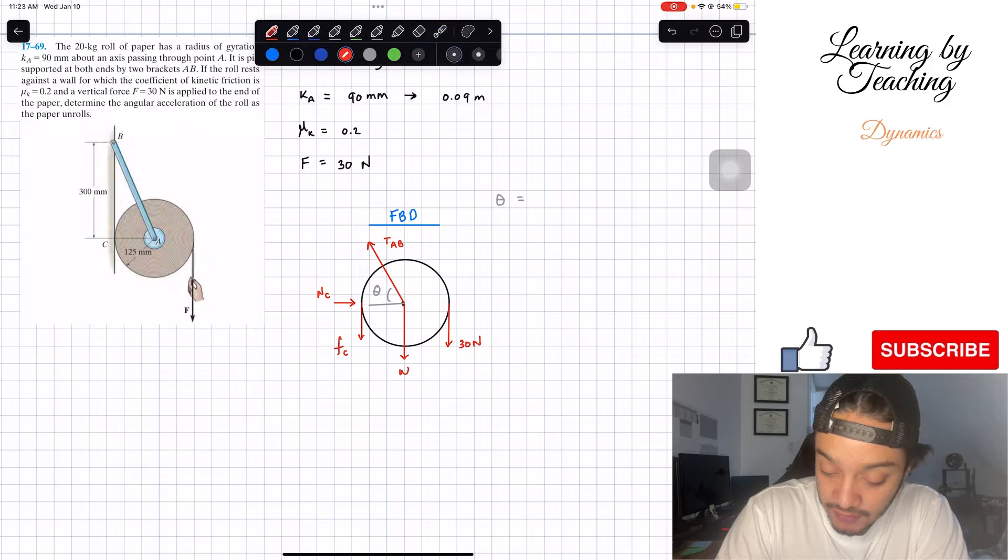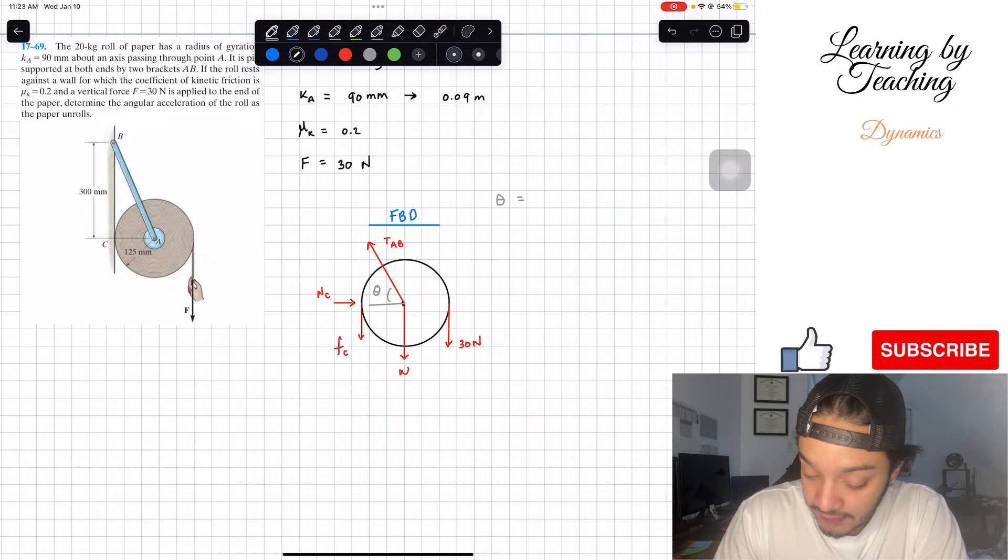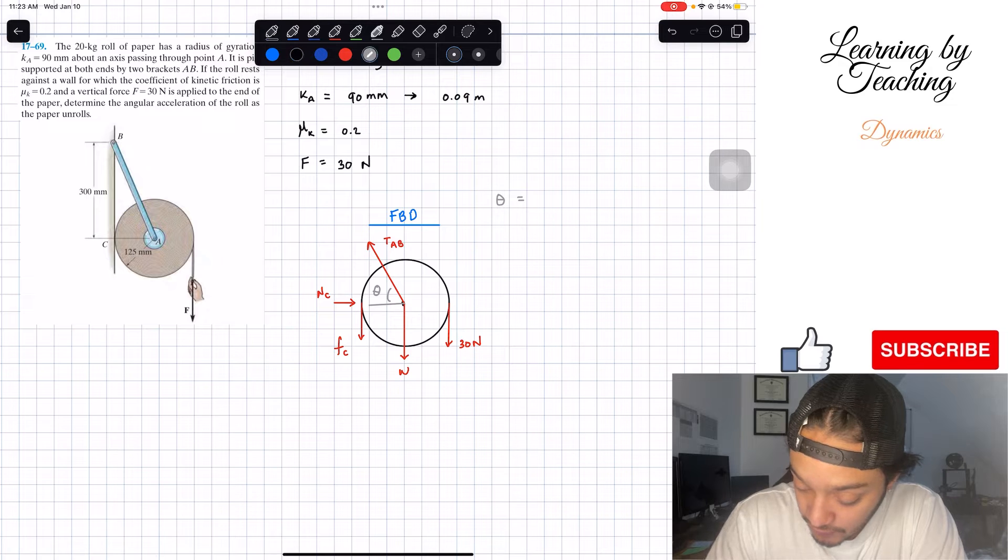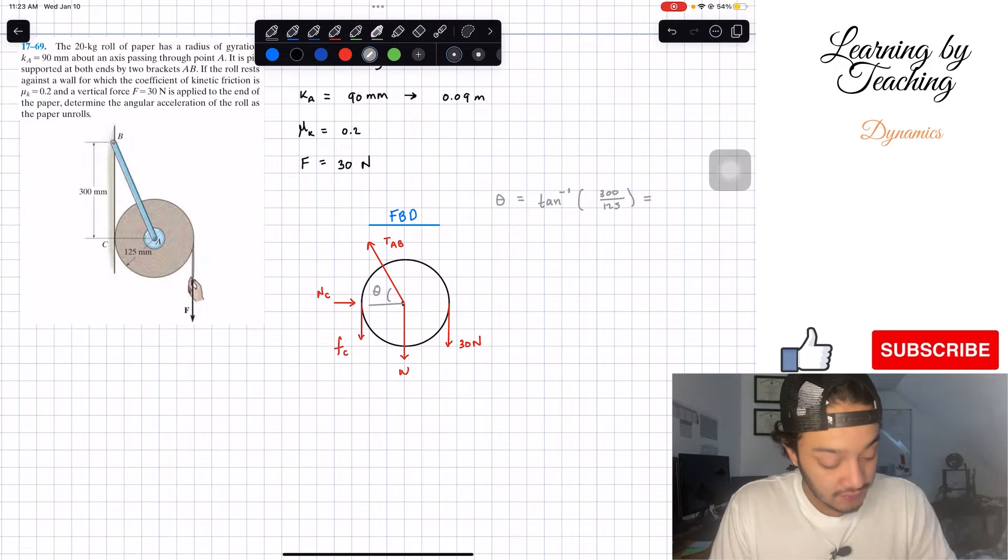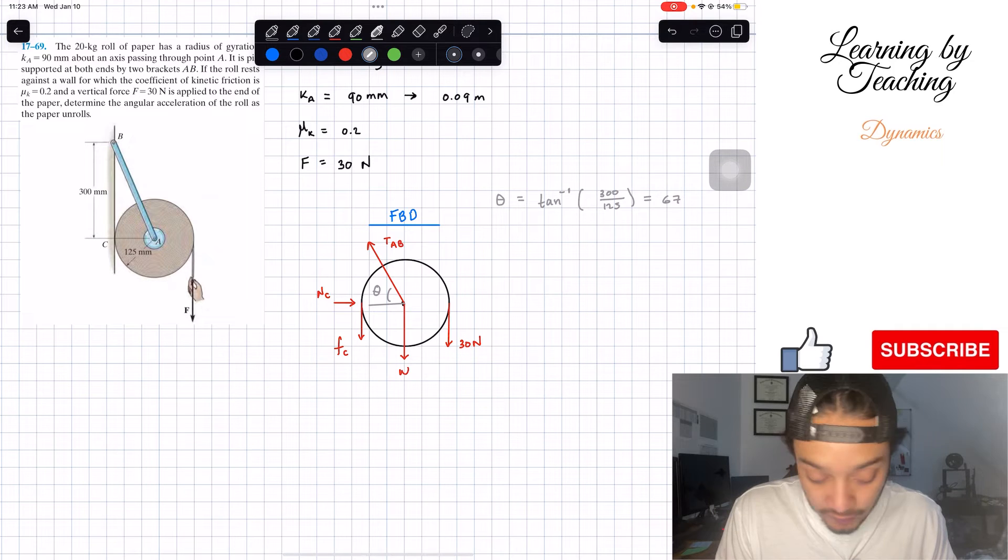For that angle theta, we're going to do the inverse tangent, which is opposite over adjacent. So 300 divided by my adjacent 125. And if we plug this into our calculator, we're going to get a total of 67.38 degrees.